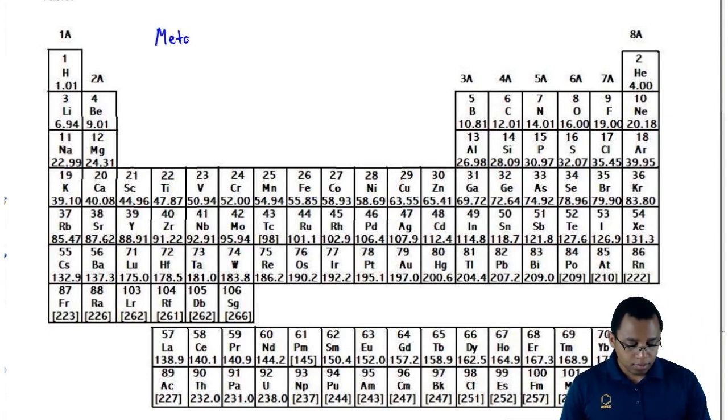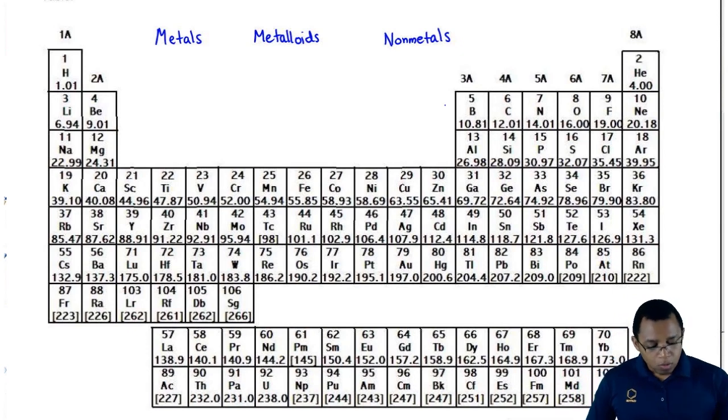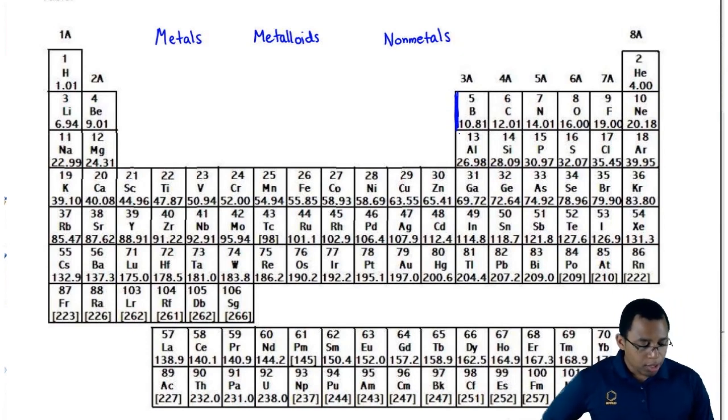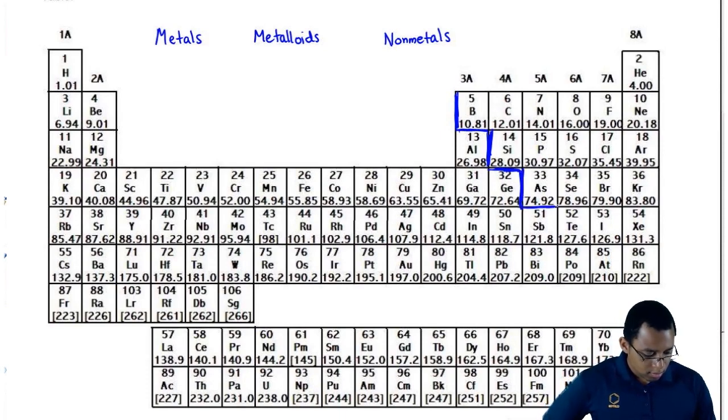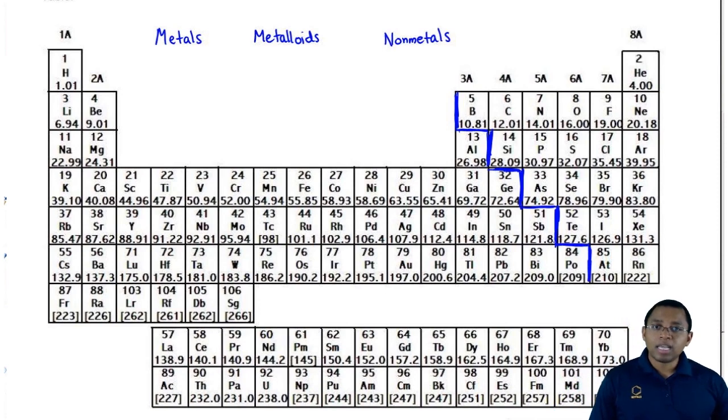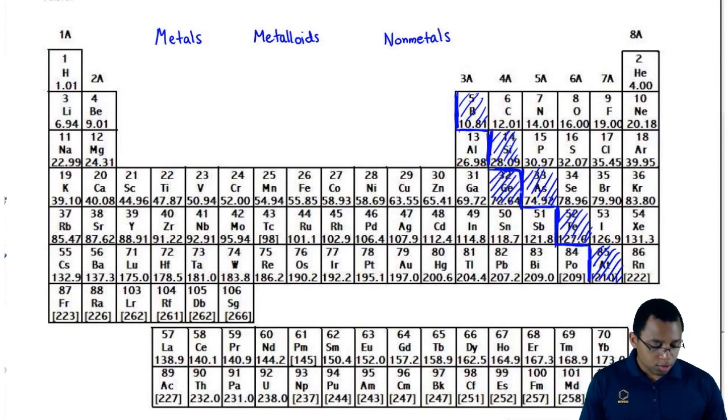There are metals, metalloids, and nonmetals. Here when we go to B, B is called boron, we're going to draw a staircase. On this staircase there's boron, silicon, arsenic, Te, and At. These five elements that are on the staircase, right underneath the staircase are germanium and antimony (Sb). These seven elements that I've highlighted with these blue streaks, these are our metalloids.